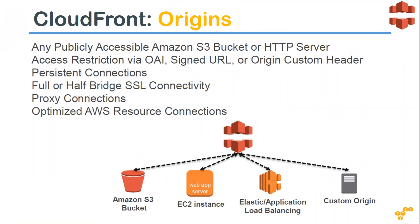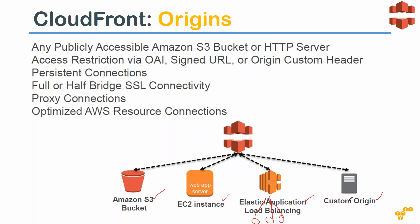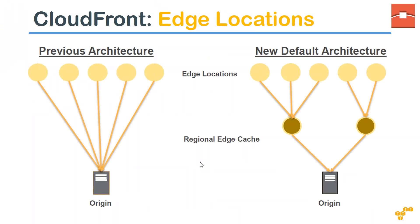Regarding origins, CloudFront can pick up data from an S3 bucket, an EC2 instance, or any application sitting behind an Elastic Load Balancer. You simply point CloudFront to the ELB domain name and it automatically forwards to any application behind that load balancer. You can also configure CloudFront with a custom origin — for example, if your corporate website is in an on-premise data center, you can configure CloudFront to send traffic to your custom IP addresses.